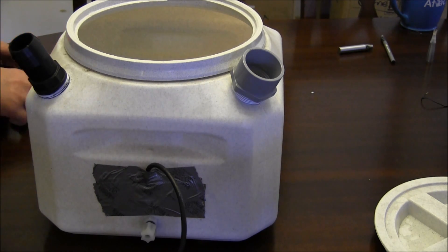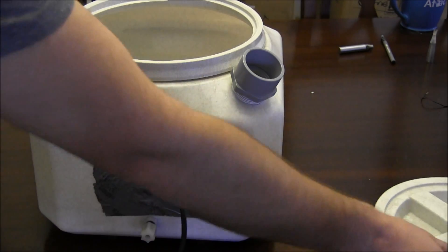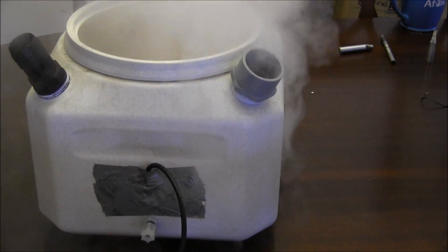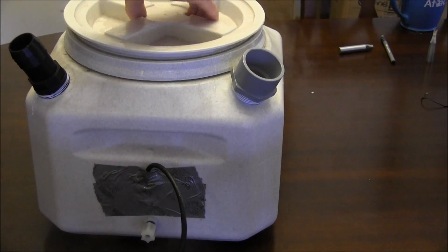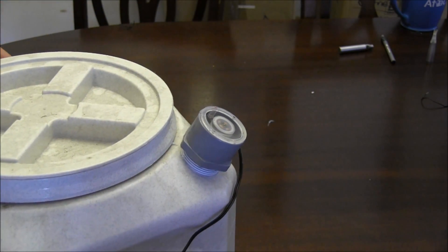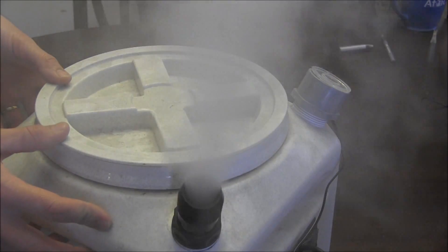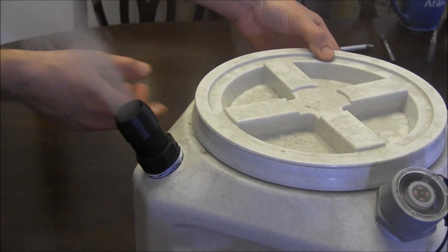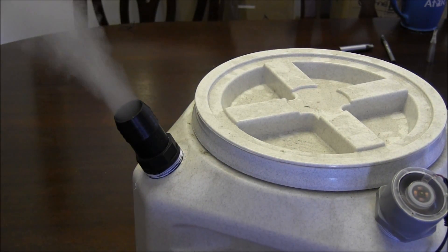So our fan we have here is on 12 volt highest speed, we've got the mist maker running inside. I already got a good bit of mist going. We'll stick our lid on. There you have it.